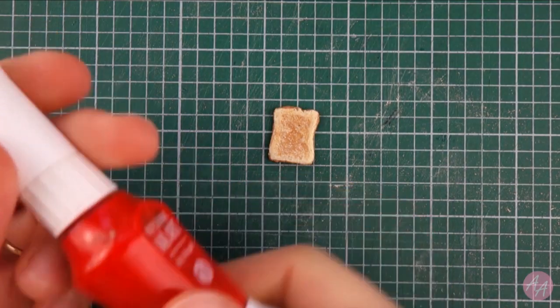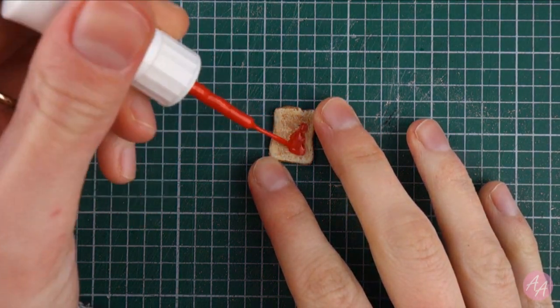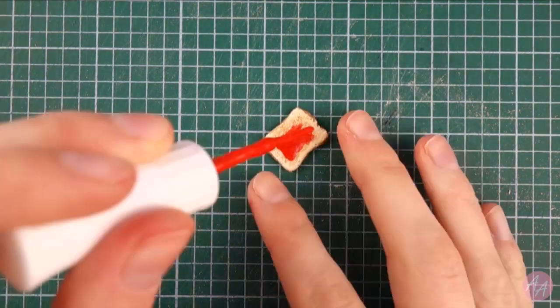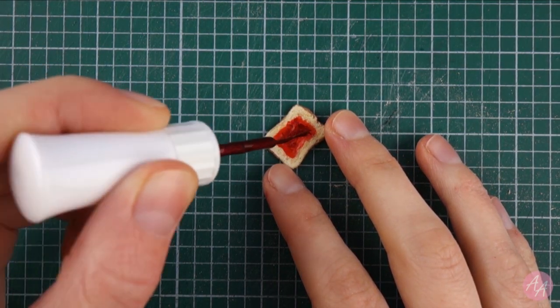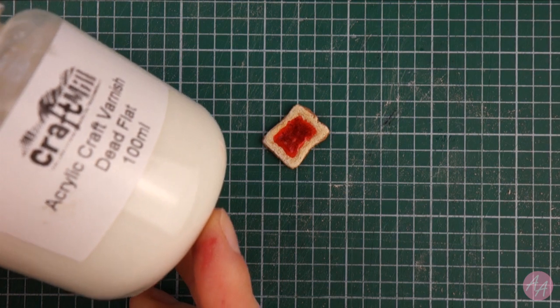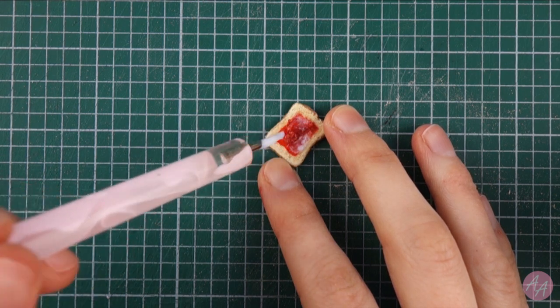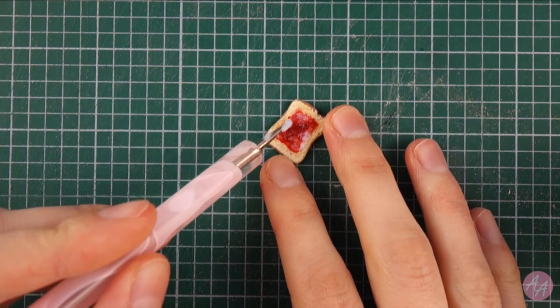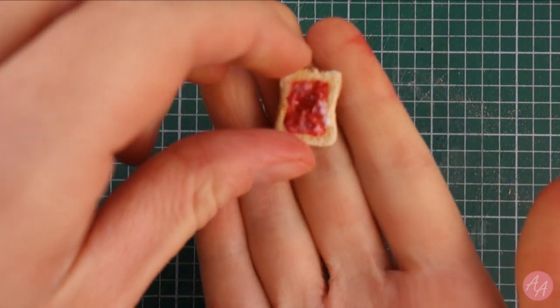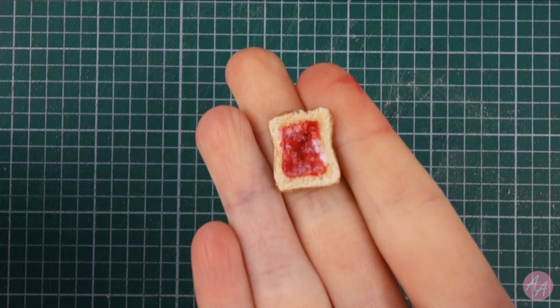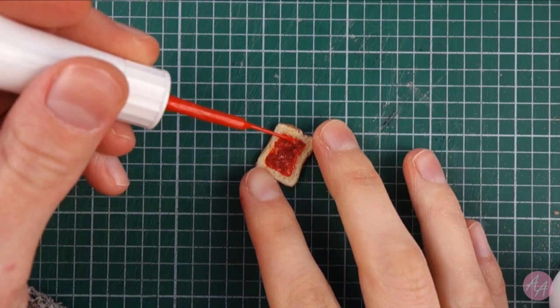Now I need to put some of that jam on the toast. I'm using a mixture of the two nail varnishes, and then mixing in some of this varnish, which makes the nail varnish kind of lumpy, the way jam can be. Once that's dried, I go over it again with some more color until I'm happy with the way it looks.